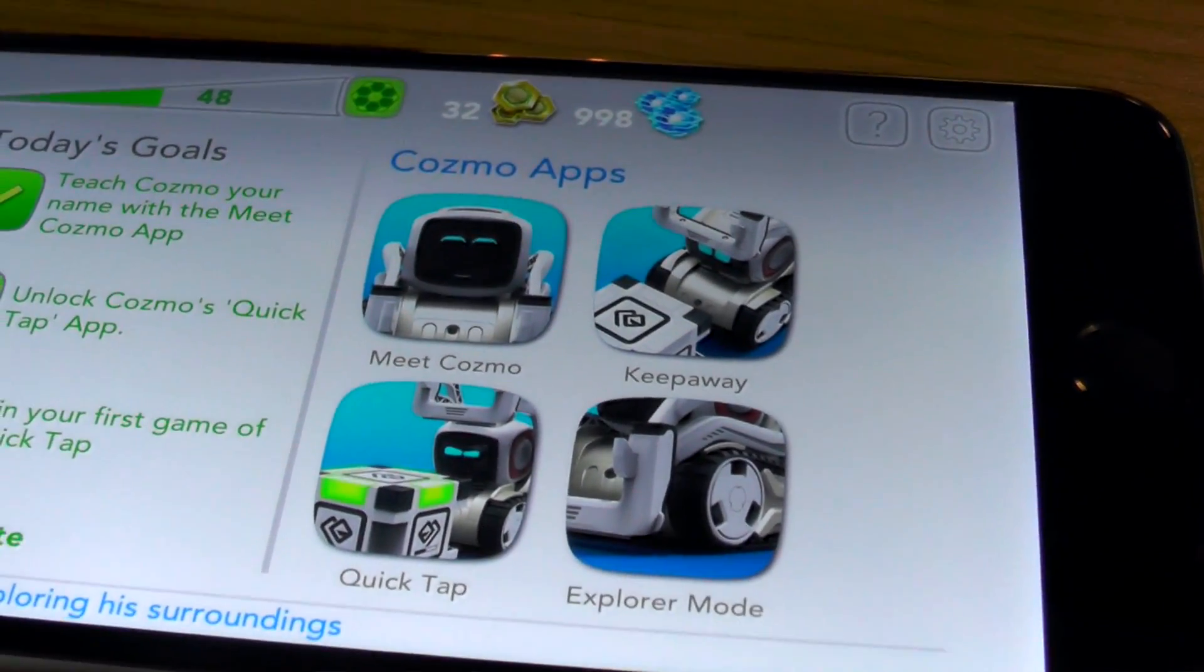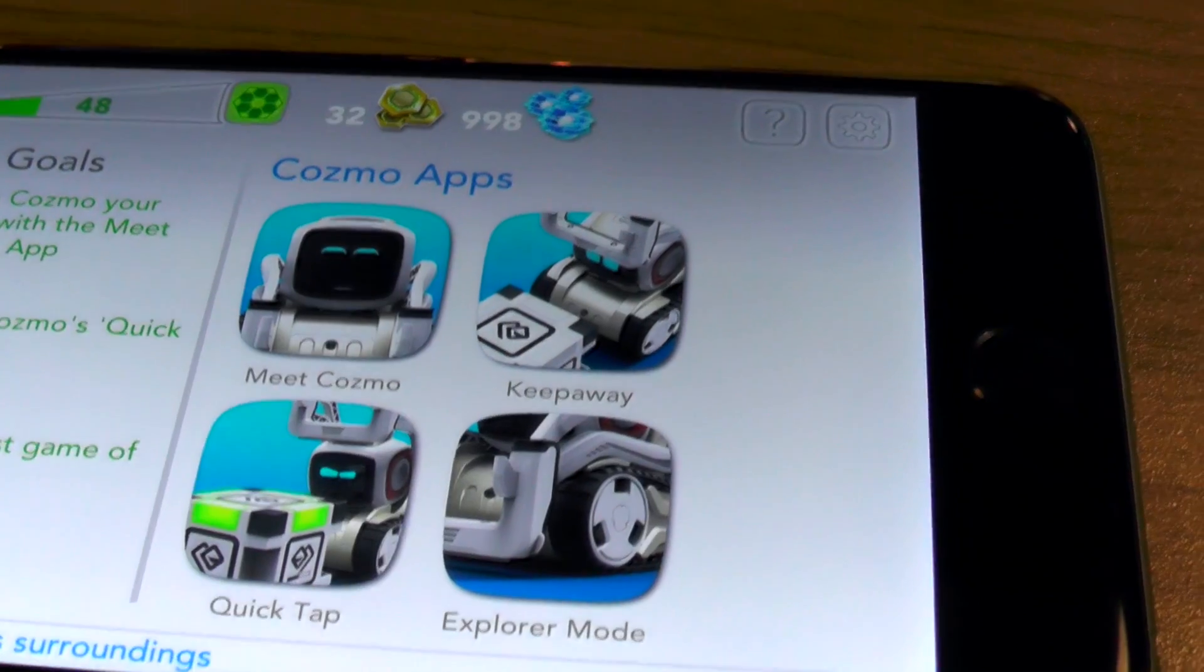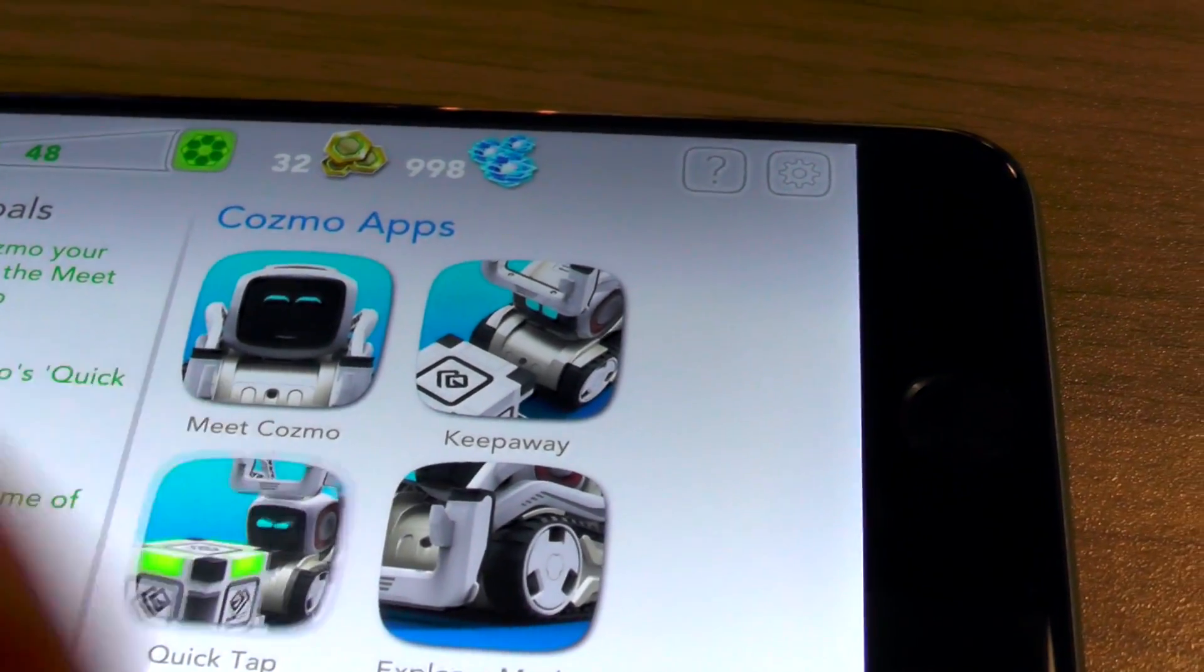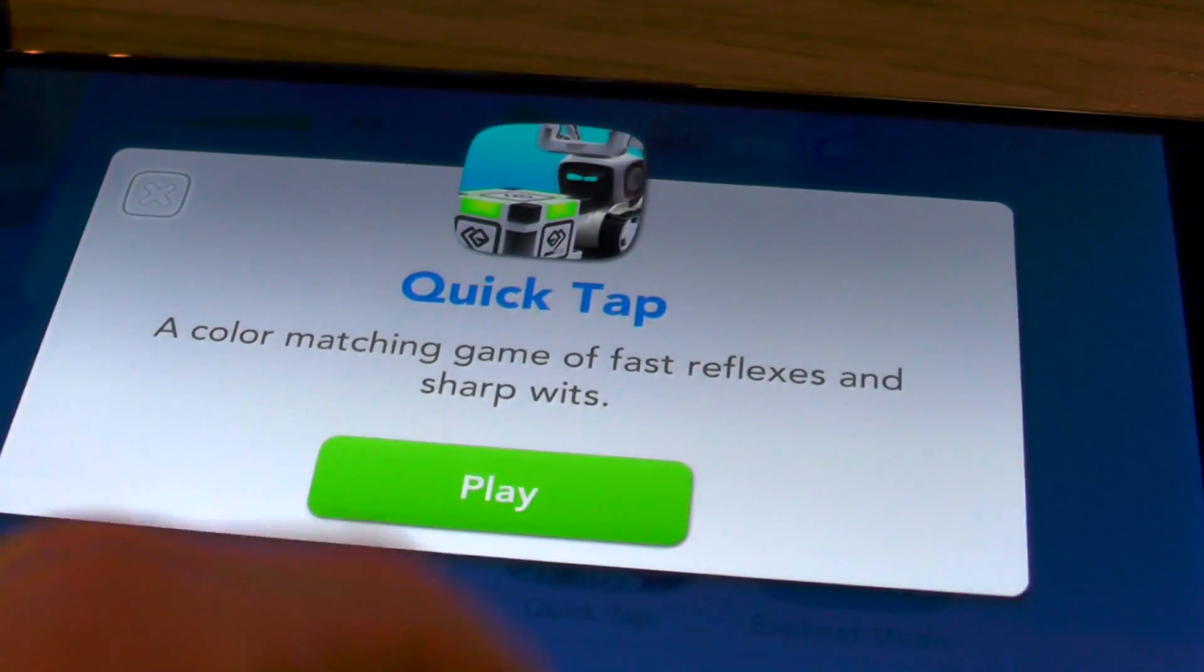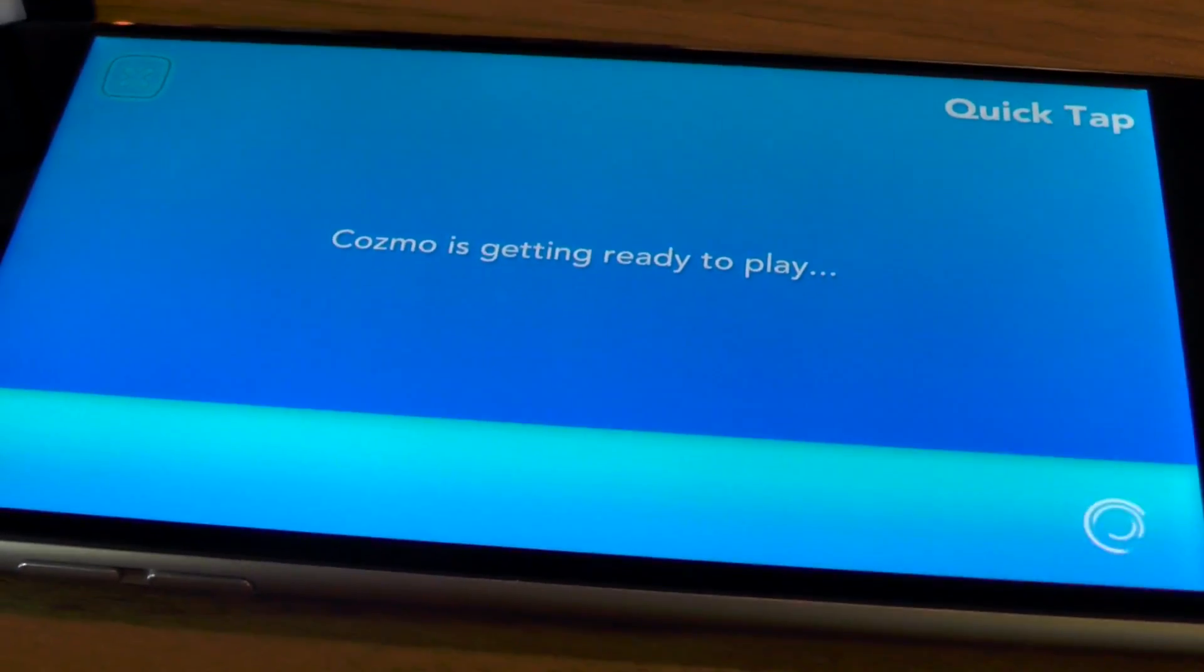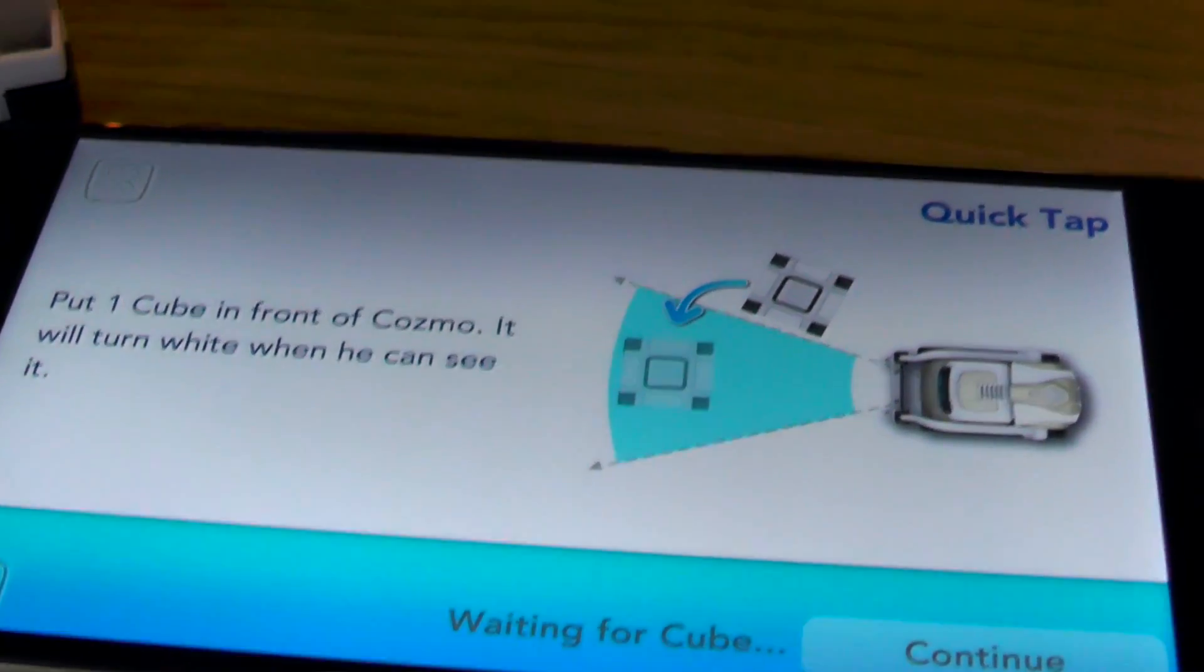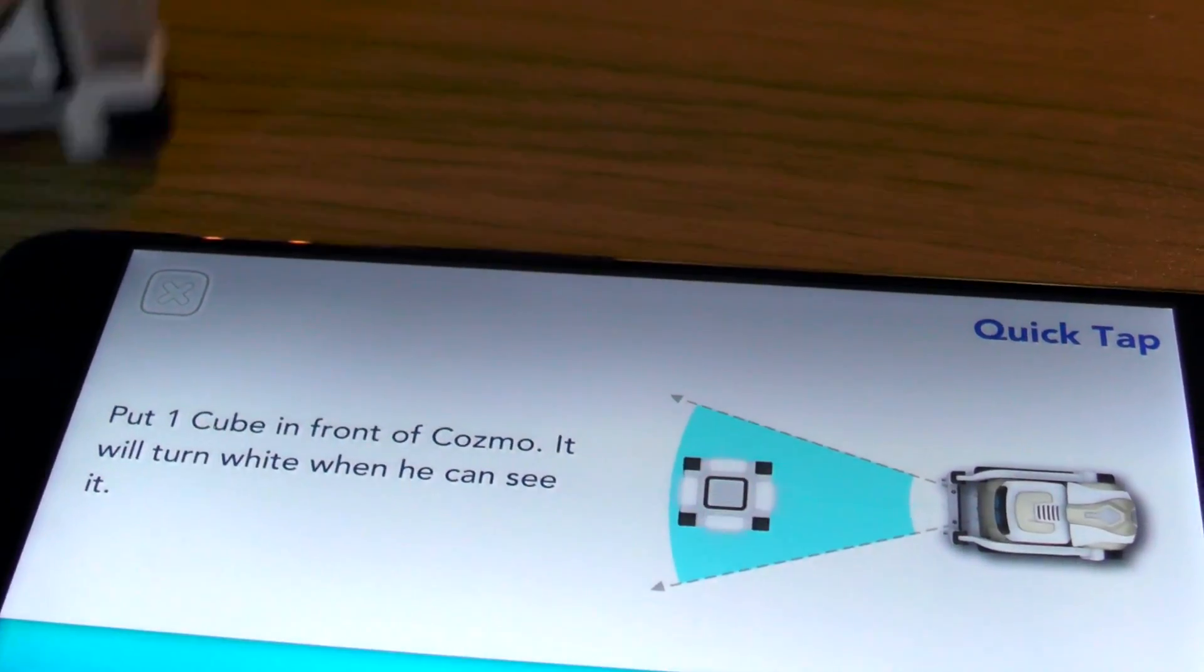You can play different games with the robot where he will play either with you or against you. One of the games we ship with is called Quick Tap. It's a game where the robot has one power cube and you have one power cube.